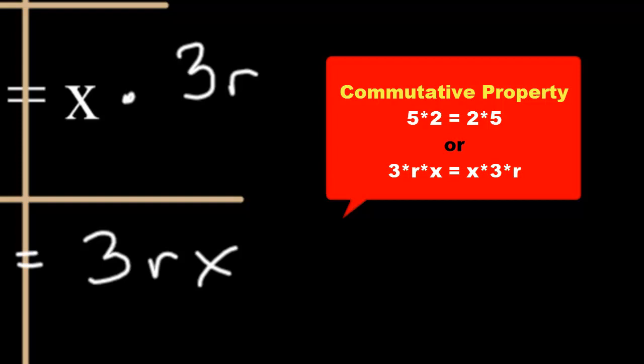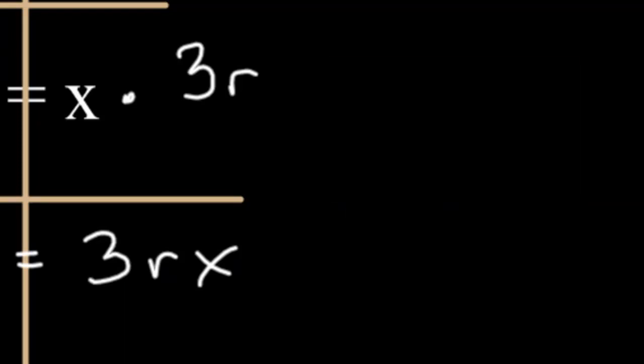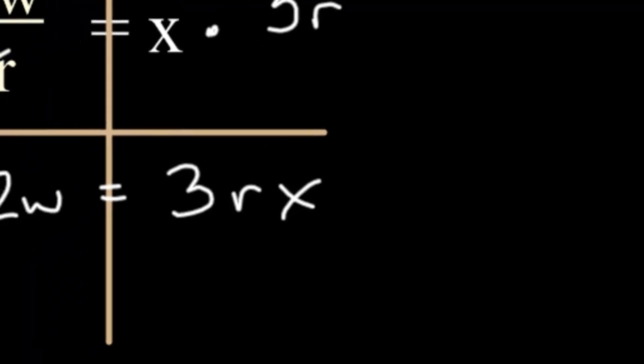Because, you see, math teachers are not very good in English and spelling, but we're really good with being neat and putting stuff in alphabetical order. So 3rx is the same as x3r.